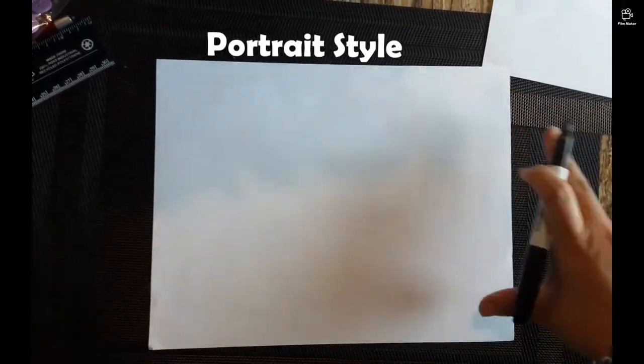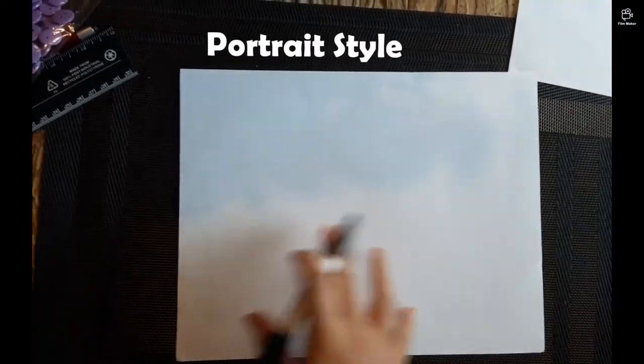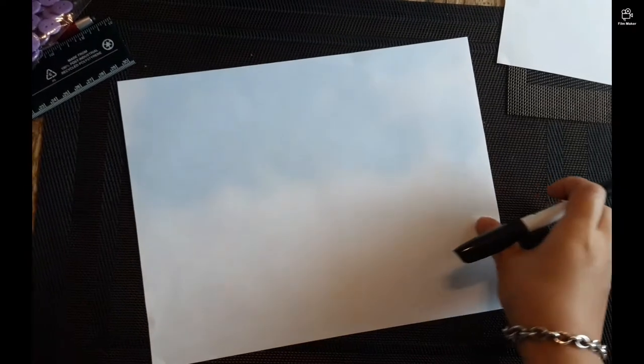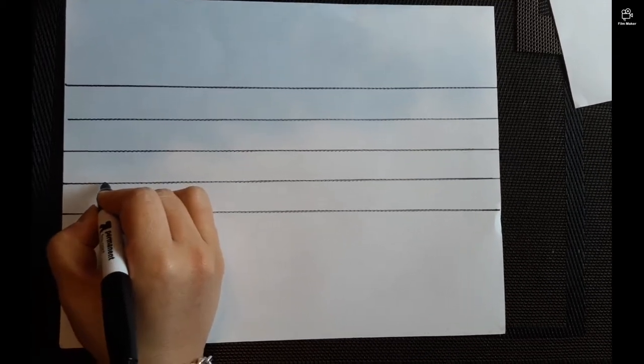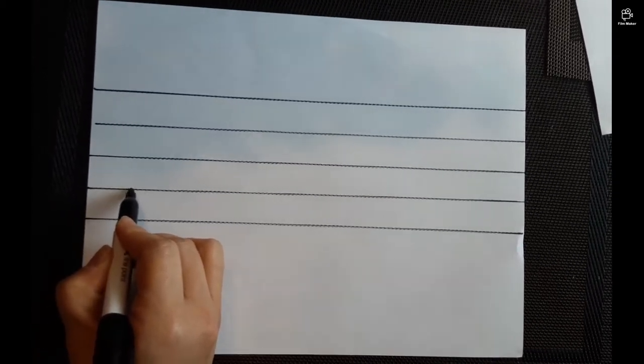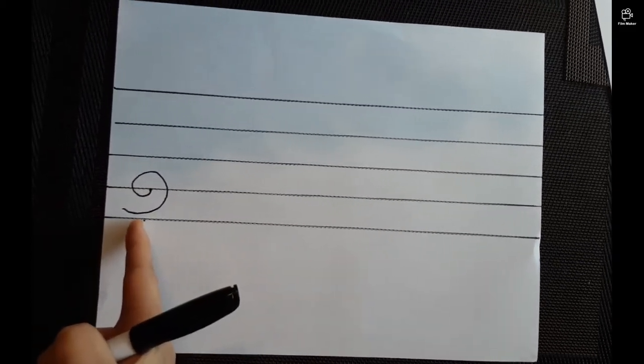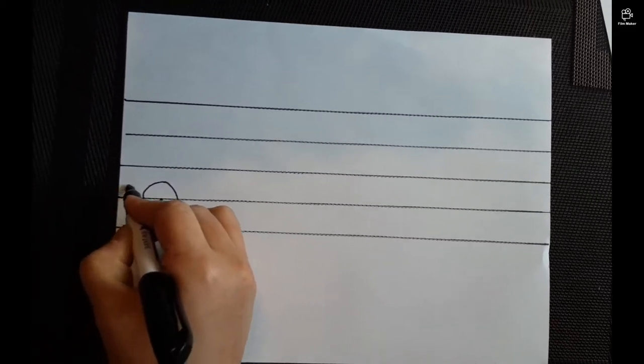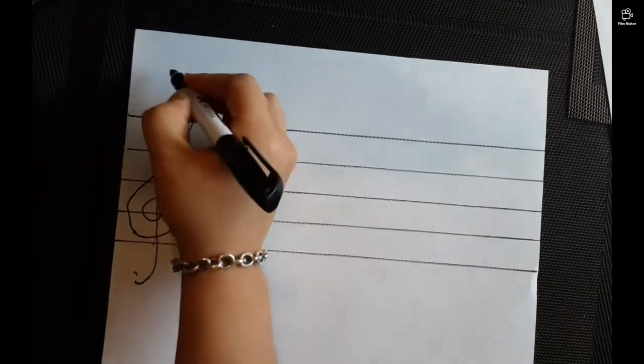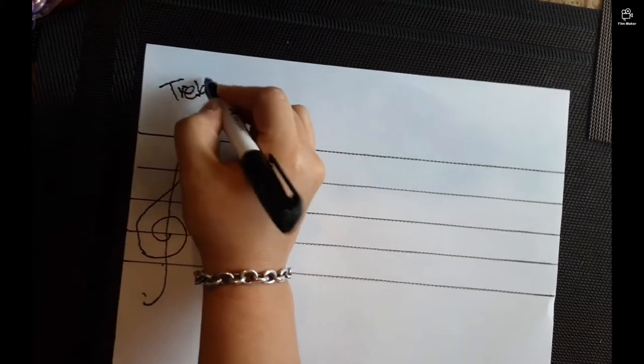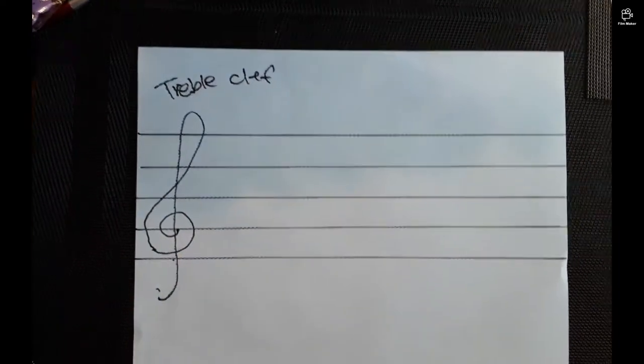Piece of paper. Now, this time, instead of drawing lines this way, we're going to use the portrait. So, I'm going to draw five lines this way, okay? And as always, what do you do? You draw a treble clef. Start from one, two. Second line from the bottom. Draw a spiral. But we do not go past this line. Go straight up. Down. Treble clef.